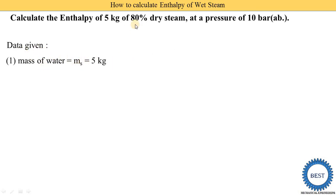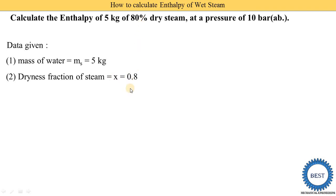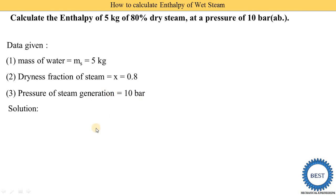The data given is: mass of steam ms = 5 kg, dryness fraction x = 80% = 0.8, and pressure of steam generation = 10 bar.